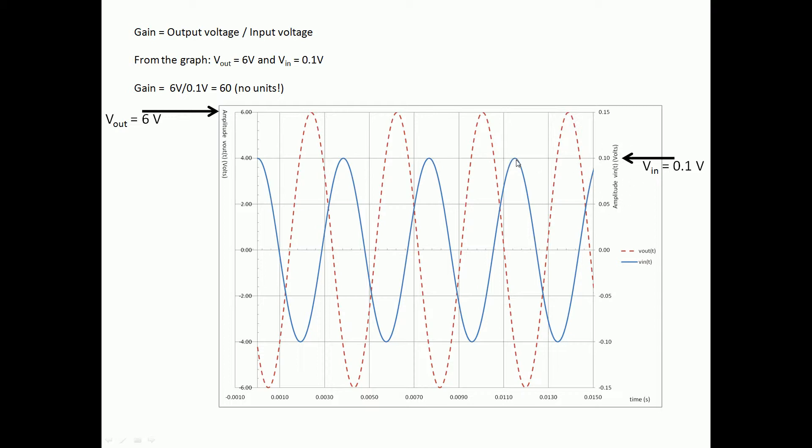From this graph we can see that V_out, we're reading from this axis over here, the maximum value of this is six volts. And V_in, we want to look at this axis over here, we can see that the maximum value here is 0.1 volts. So just to calculate the gain we do the output over the input.